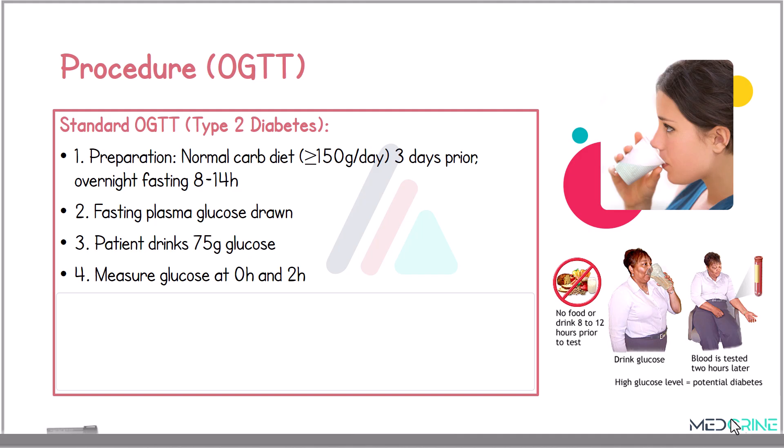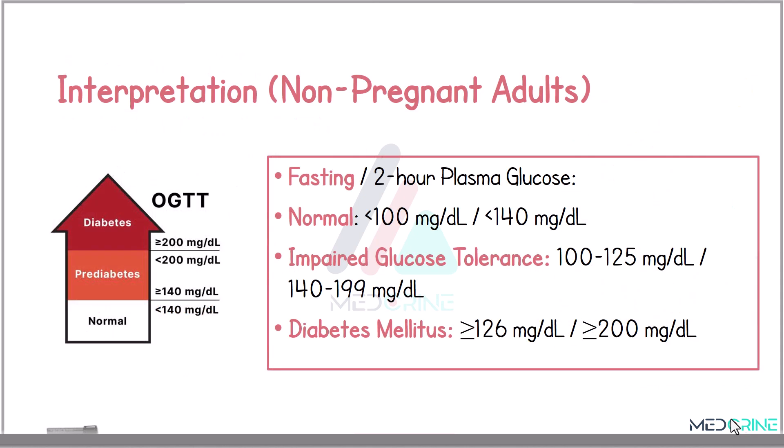Blood is drawn at time points of 0 and 2 hours during the 2-hour measurement period to determine blood sugar levels. To interpret results for oral glucose tolerance testing in non-pregnant adults, normal tolerance is defined by a fasting blood sugar level below 100 mg/dL (approximately 5.6 mmol/L), and a 2-hour blood sugar value below 140 mg/dL.